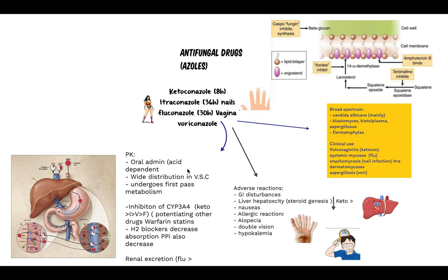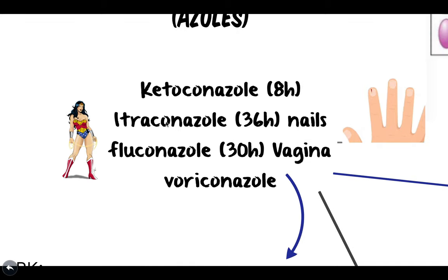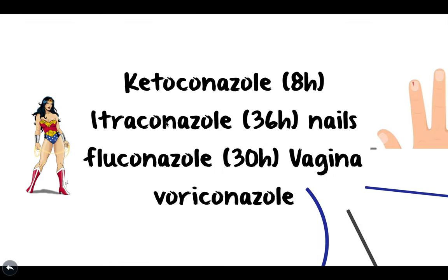The four main azole drugs are ketoconazole, itraconazole, fluconazole, and voriconazole. Fluconazole has wide distribution in the vaginal fluid; itraconazole distributes to the nails; voriconazole to the lungs and pleural serosa. Ketoconazole is the king of azoles, being widely distributed everywhere.